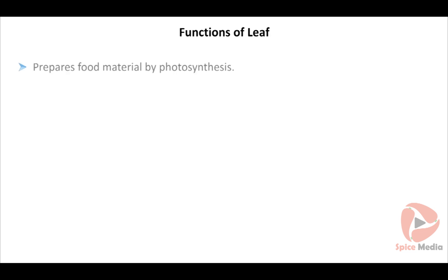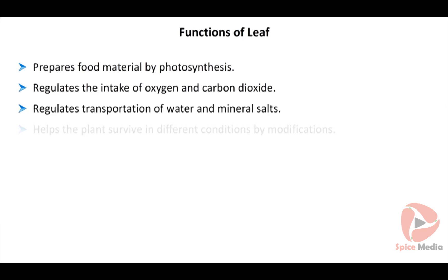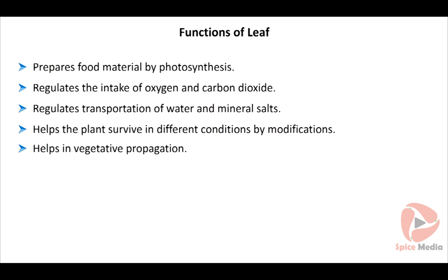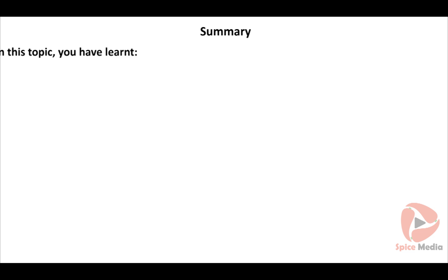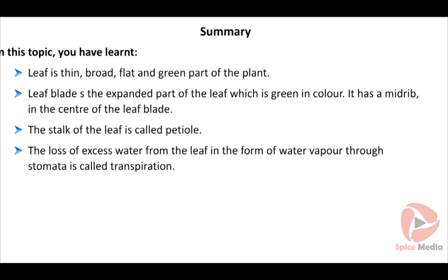Functions of a leaf: leaves prepare food by the process called photosynthesis. They regulate the intake of oxygen and carbon dioxide, and also regulate transportation of water and mineral salts. They help a plant survive weather changes by modifying themselves, and they help in vegetative propagation. The leaf blade is the expanded green part of the leaf with a midrib in the centre. The loss of excess water from the leaf in the form of water vapour through stomata is called transpiration.